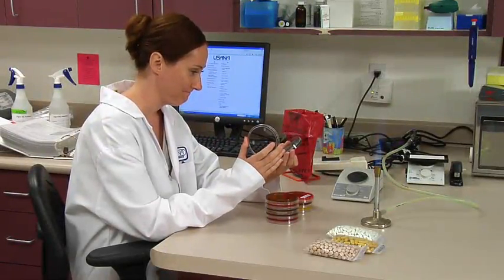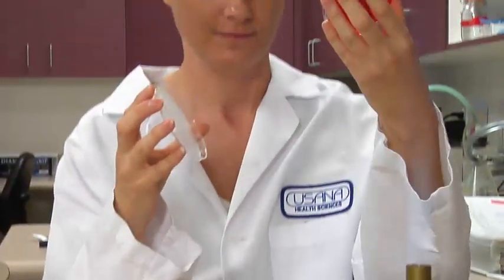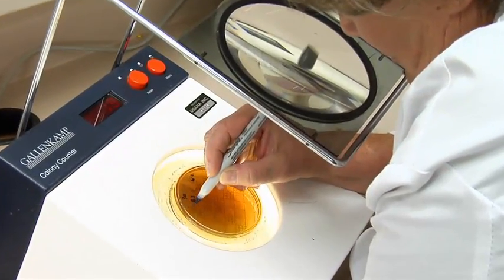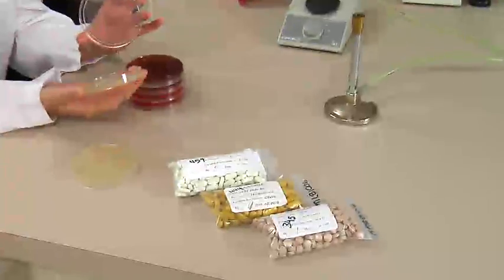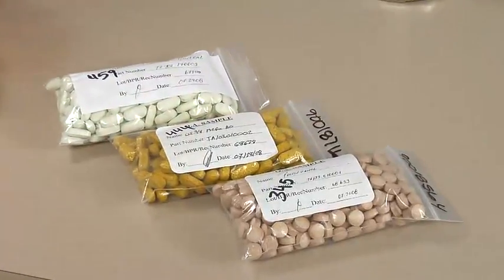In addition, our quality control laboratories include a microbiology section. Before manufacturing can begin, incoming raw materials are quarantined until samples are taken and tested for biological contaminants such as Salmonella, E. coli, Staphylococcus aureus, mold and yeast. Only after passing all of these tests are the raw materials approved for use in USANA products.